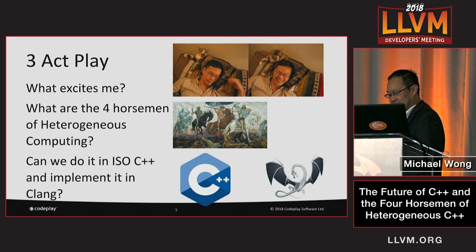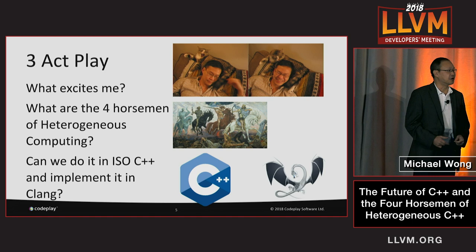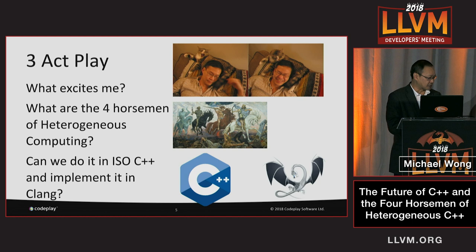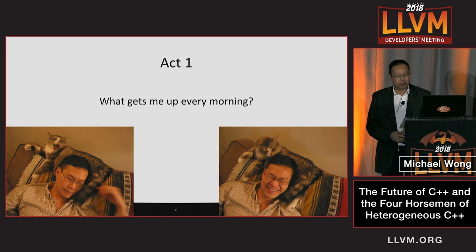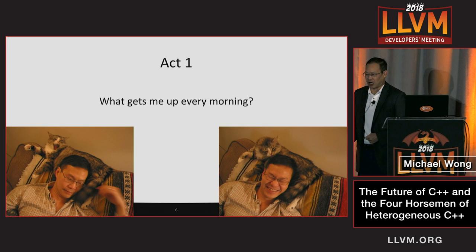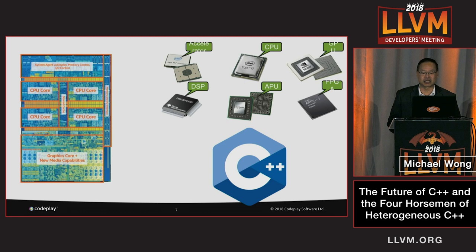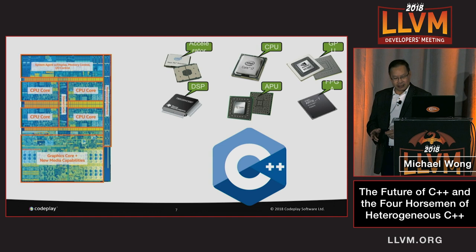The talk is going to be like a play in three acts. In the first act, I'm going to talk about what excites me. Then I'm going to talk about what are the horsemen of heterogeneous computing, and then whether we can do it in ISO C++ and implement it in Clang. What gets me up every morning is the idea of what it would mean to be able to access and fully control all the speed and power of your device, doing it across many devices, all in one high-level language.